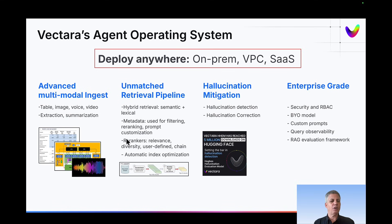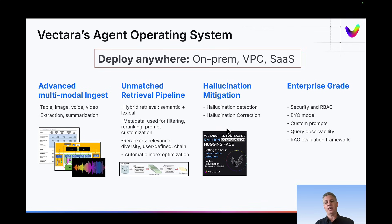We have a very strong focus on retrieval accuracy with hybrid retrieval, lots of features around metadata, re-ranking, etc. We're known for a lot of work around hallucination mitigation — both hallucination detection and correction. Our hallucination detection model, also called HHEM, has just passed five million downloads a couple months ago — I think it's at 5.5 million right now.